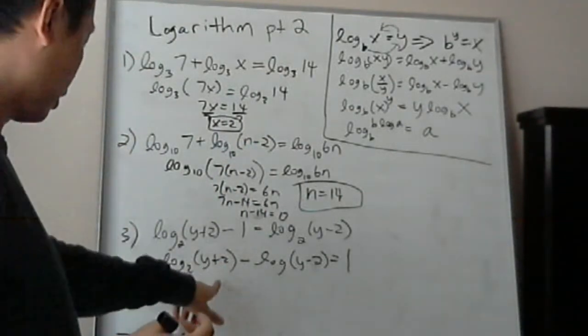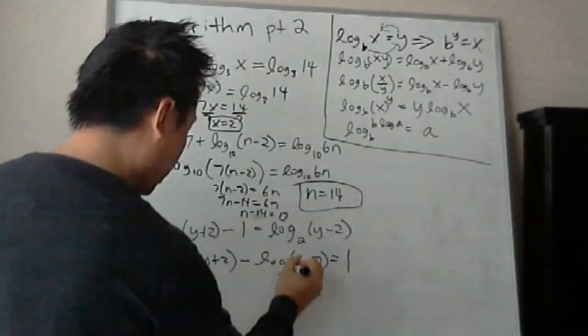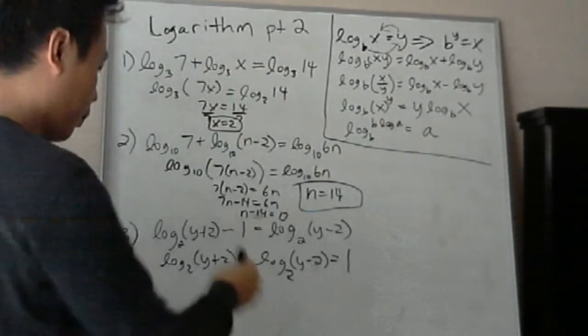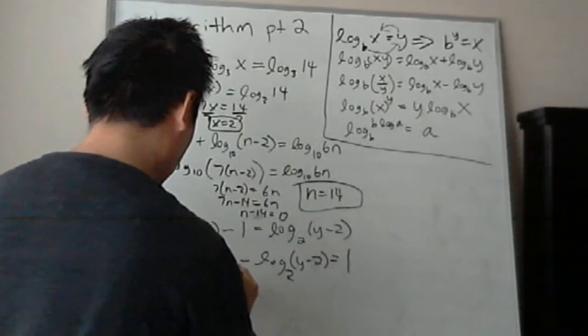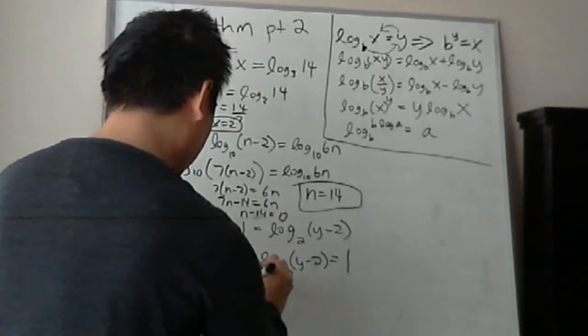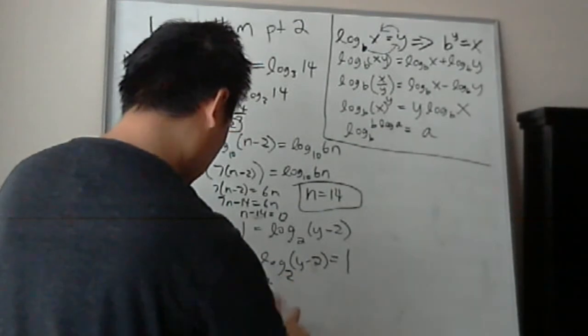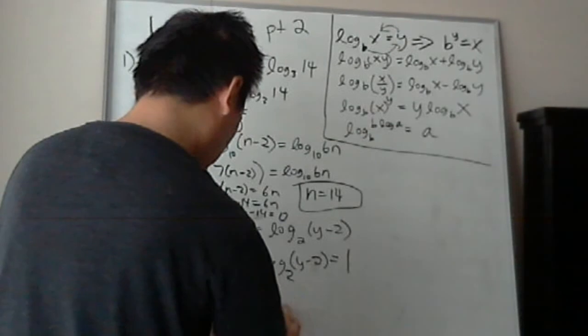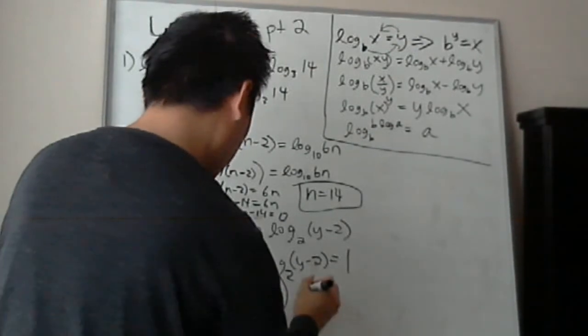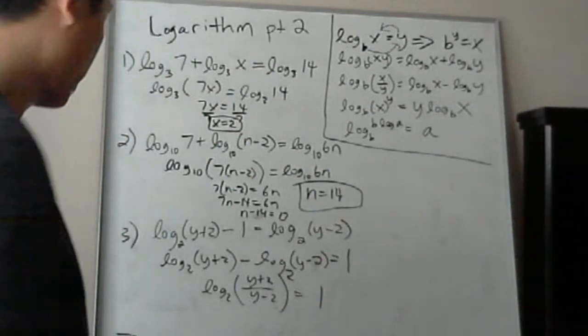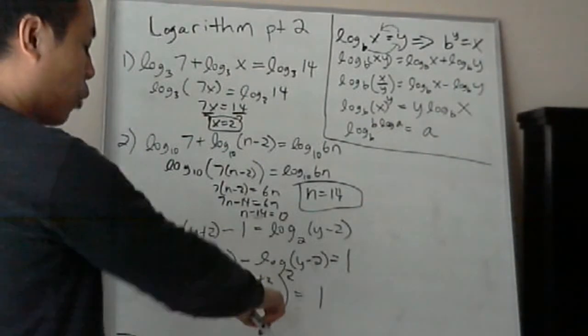So, what do you do here? Well, it says y plus 2, log base 2, y plus 2, and the logs, remember, they're the same, the same basis. So, what does it say here? It says when you subtract, you divide. Divide the logs. So all you've got to do is write it as a division. So now I have log base 2 to y plus 2 over y minus 2 equals to 1.